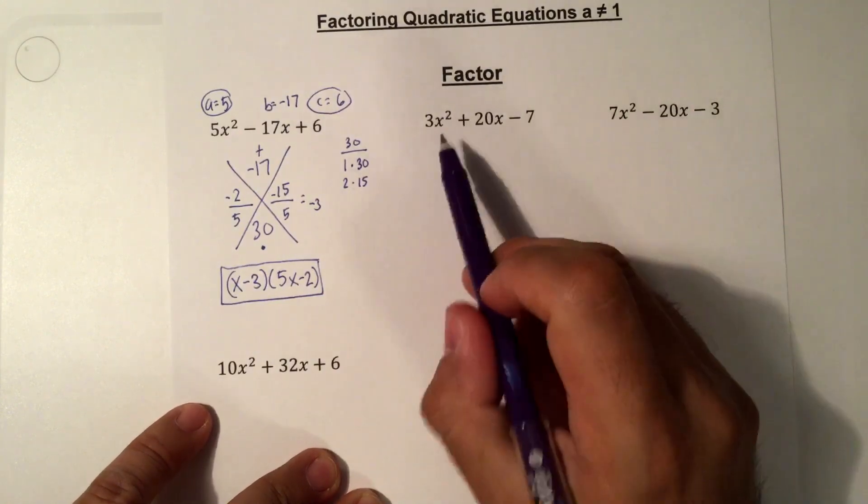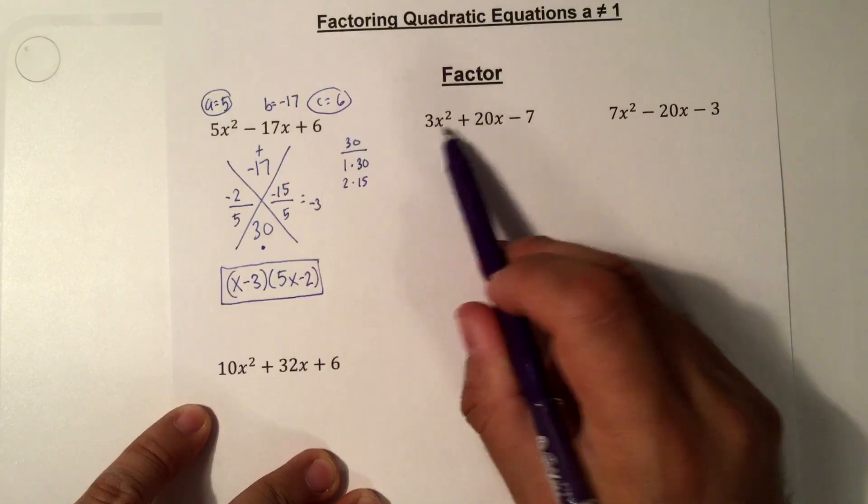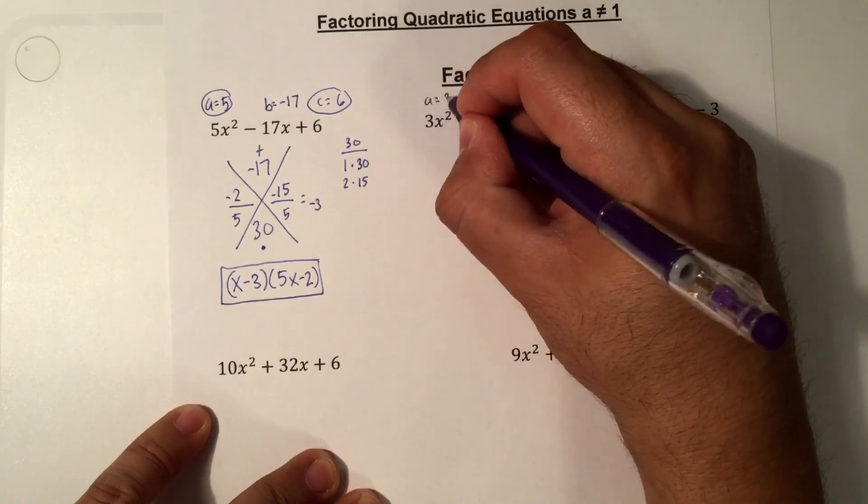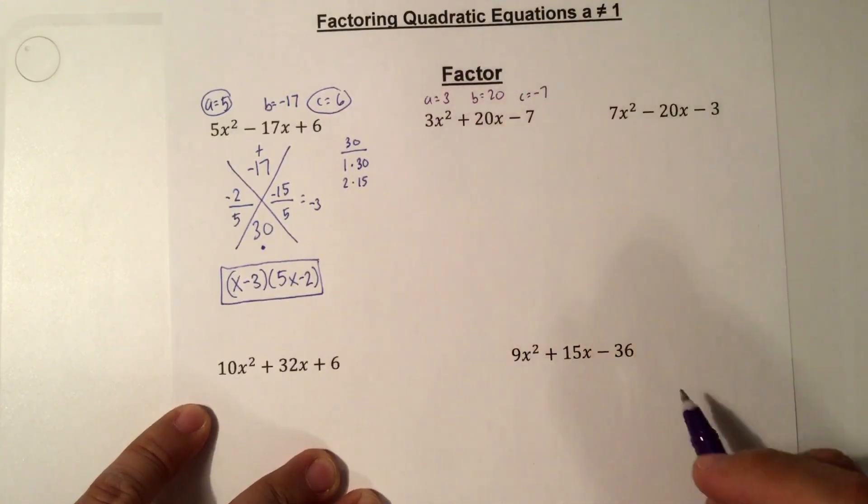On to the next one. Is it in standard form? Yes. Is there a GCF? 3, 20, negative 7. No. x, x, no x. So no. Now we identify a, b, and c. So a is 3, b is 20, and c is negative 7.